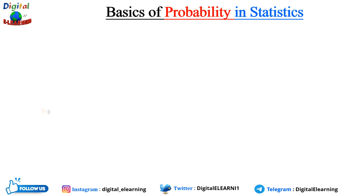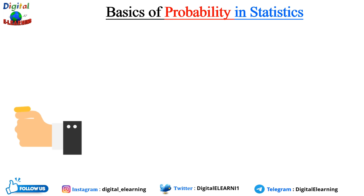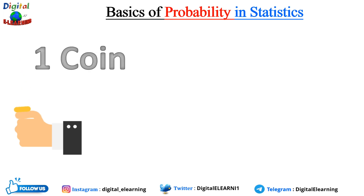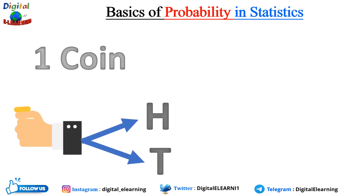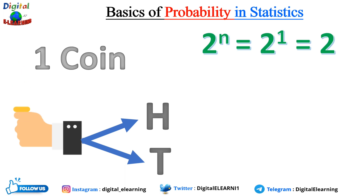The best example to understand probability is flipping a coin. In a single toss of a coin there are two possible outcomes: heads or tails. The probability of the coin landing on heads is 50 percent, and likewise on tails it is also 50 percent.